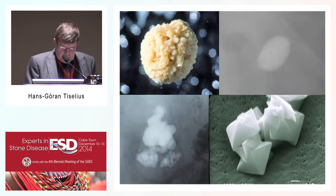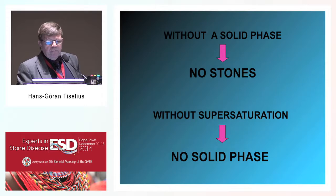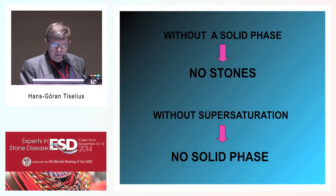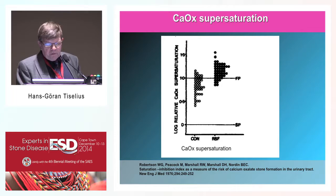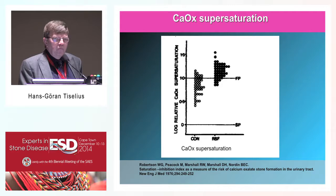It is axiomatic that without formation of a solid phase in urine there will be no stones, and without sufficiently high supersaturation there will be no solid phase, no crystallization. It was very early demonstrated — and I think it is important to look at some of the observations and achievements that provide the basis for how we now consider the different possibilities of stone formation in the urinary tract.